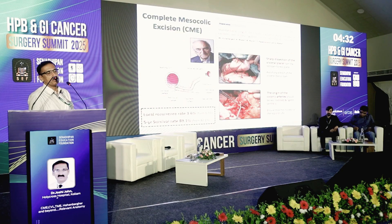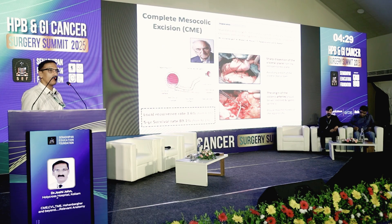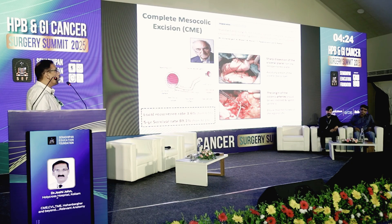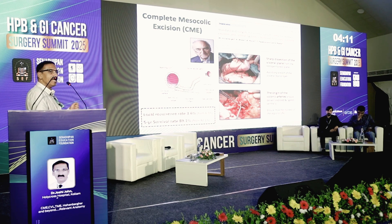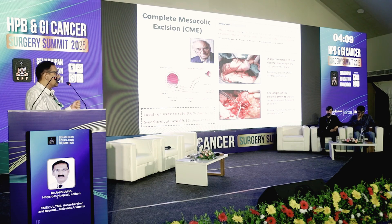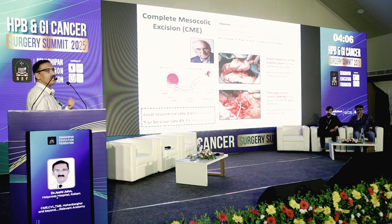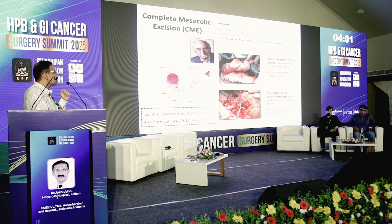This same concept of embryological dissection has been extrapolated onto colonic surgery by the German surgeon Hohenberger, who in his landmark publication in 2008 put forth two important principles: one, sharp dissection of the visceral plane separating the visceral and the retroperitoneal fascia; and second, ligating the vessels at their origin so that you get a maximum harvest of lymph nodes and the entire lymphatic tissue is removed. By this, he was able to show that you can reduce the local recurrence rate from 6.5% to 3.6%, and the five-year survival from 82% to 89%.